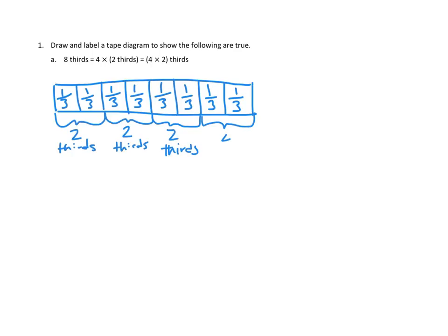This last one, I can group those together — that is 2 more thirds. So if I think of it this way, this is just 4 copies of 2 thirds: this 2 thirds, this 2 thirds, this 2 thirds, and this 2 thirds is really the same as 4 copies of 2 thirds, or 4 times 2 thirds. Either way, I'm going to end up with 8 thirds — whether I count them 1 through 8, or group them into pairs of 2 thirds and have 4 copies of those. 4 copies of 2 of the thirds, 4 times 2 of the thirds. I think all of those are true.